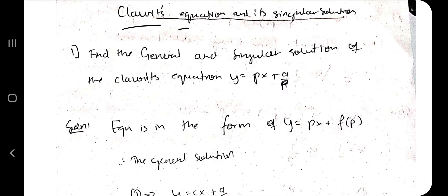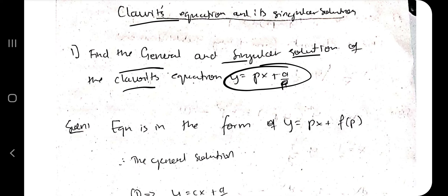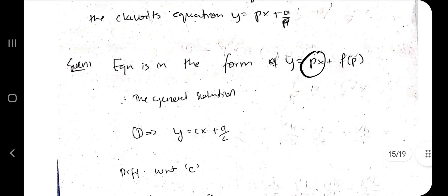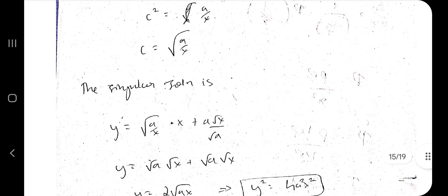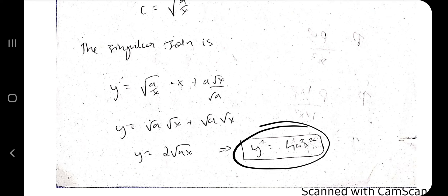Moving on to Clairaut's equation and its singular solution. Two types can appear: direct Clairaut and reducible to Clairaut. For the direct form, the equation is y = px + a/p, which is of the form y = px + f(p). The general solution is obtained by replacing p with c: y = cx + a/c. Differentiate with respect to c to find c = √(a/x). The singular solution is obtained by substituting c = √(a/x) back, yielding y² = 4a²x² after simplification.